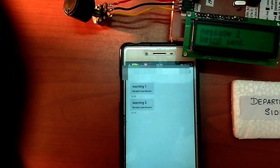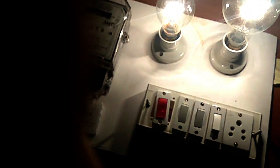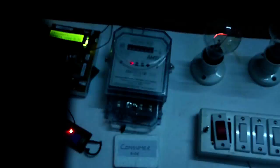If the consumer still does not reduce the load, after three warning messages, a command is sent to the microcontroller to the powerline modem to the consumer's house to cut off the power supply.